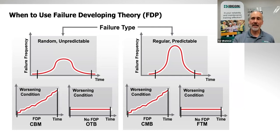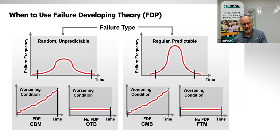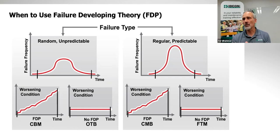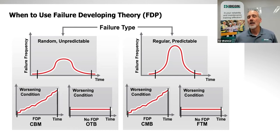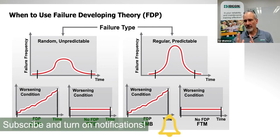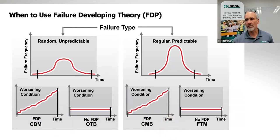What we can do in the operate-to-breakdown scenario is plan the work — we can't schedule it, but we can plan it. Get the parts, tools, safety instructions, everything ready in a box next to the equipment, so when it happens we're prepared. If we do know the failure developing period and roughly know the equipment's life, like car tires, we typically do condition-based maintenance.